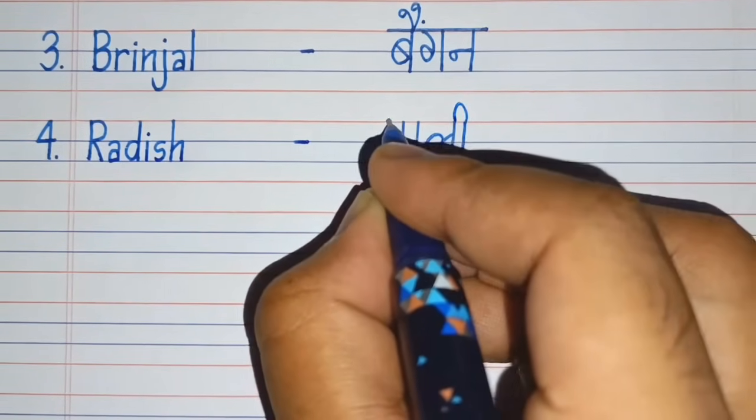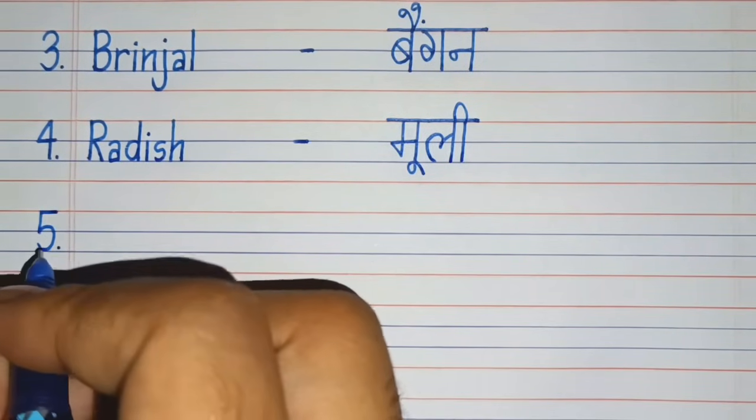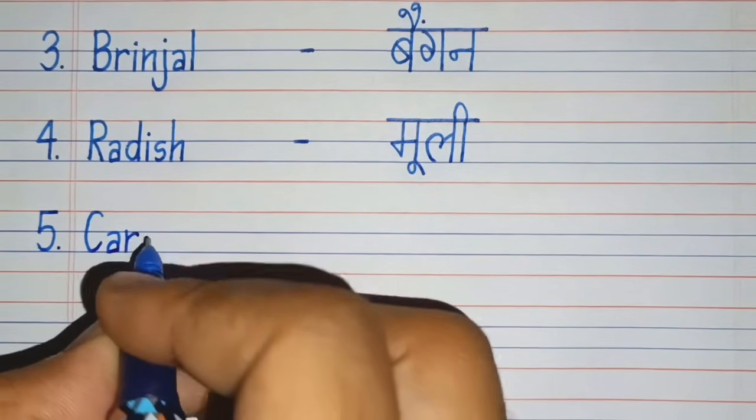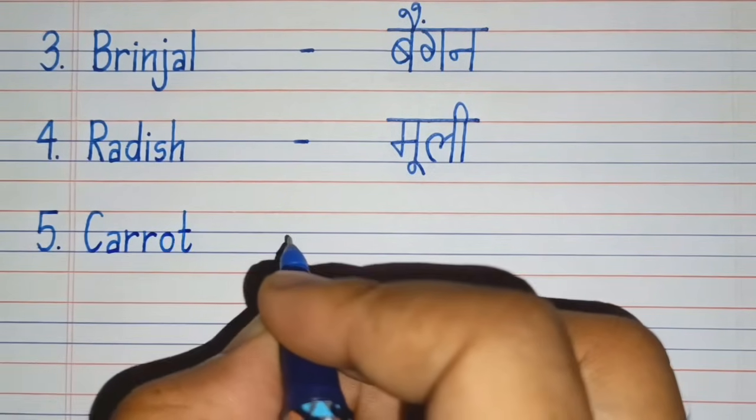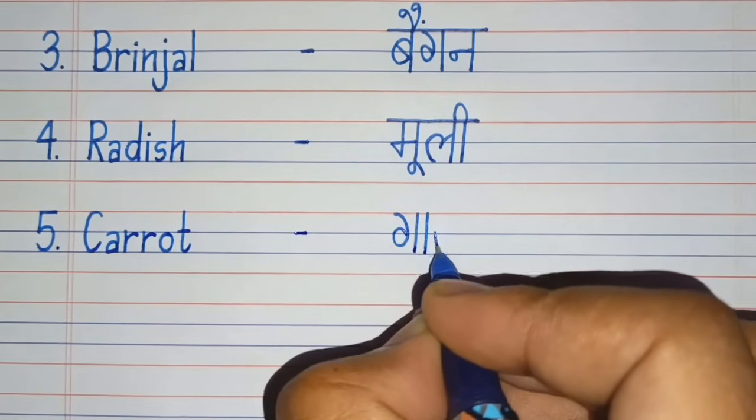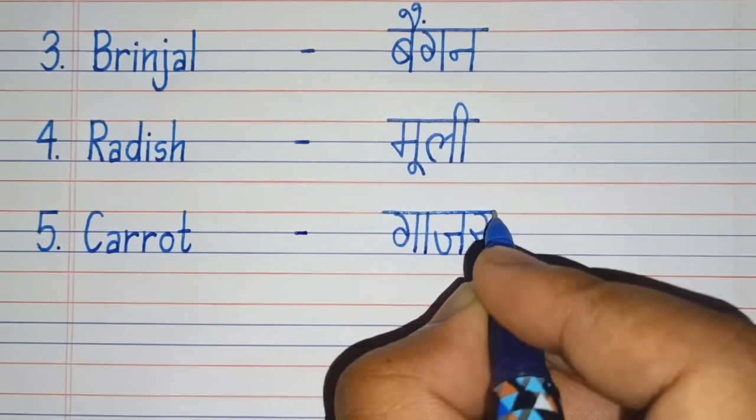Radish means Mooli. Fifth number. C-A-R-R-O-T, Carrot. Carrot means Gajar.